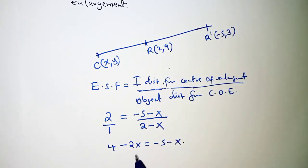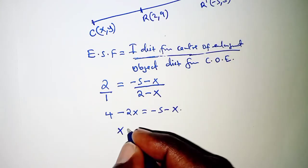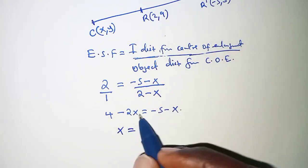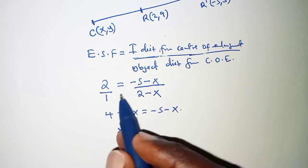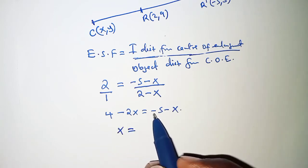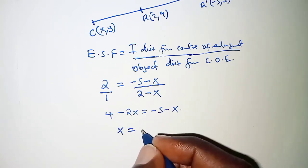And then this should be x is equal to, so we have 2x crossing so that we have 2x minus x is x and then -5 coming this side that means we'll have 4 plus 5 and that is 9.